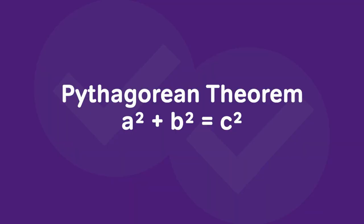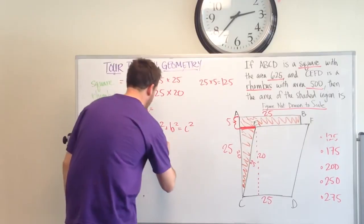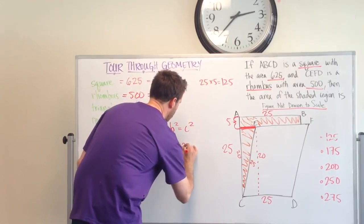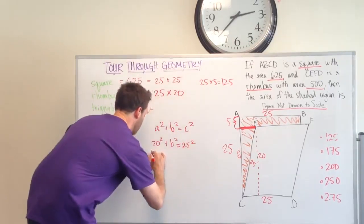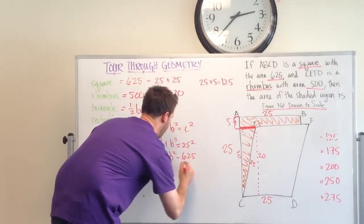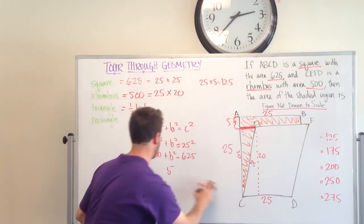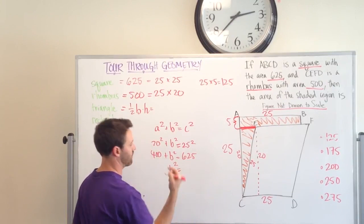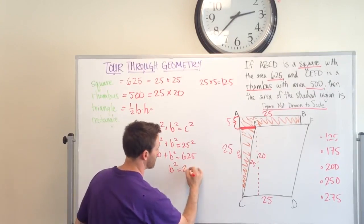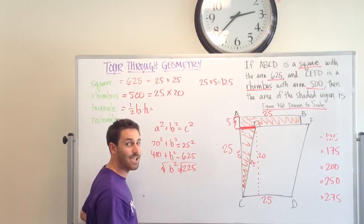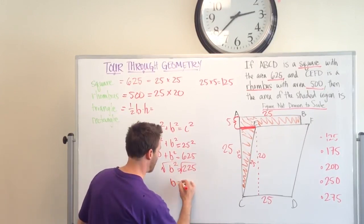Let's do a squared plus b squared equals c squared. We have 20 squared plus b squared equals 25 squared. This is 400 plus b squared equals 625. b squared is equal to 625 minus 400, which is 225. The square root of 225 is 15.